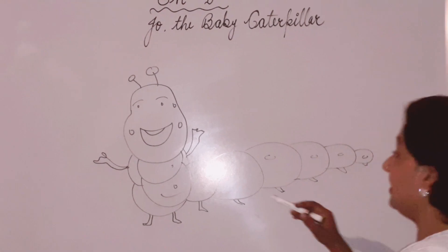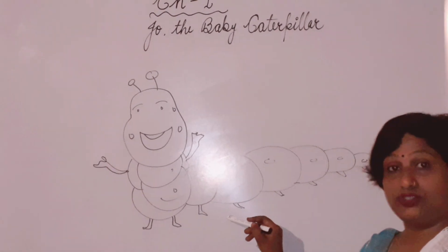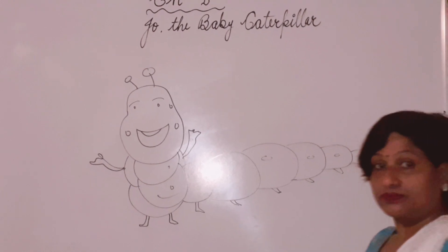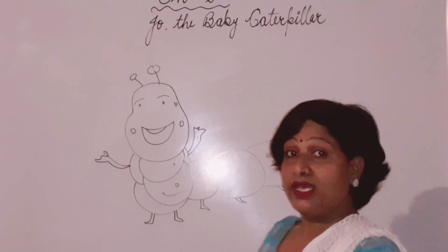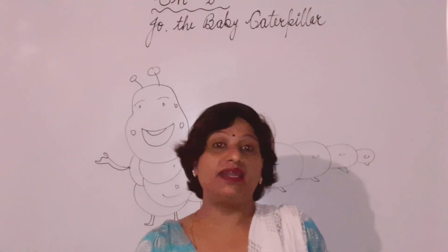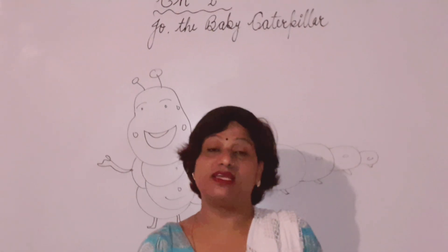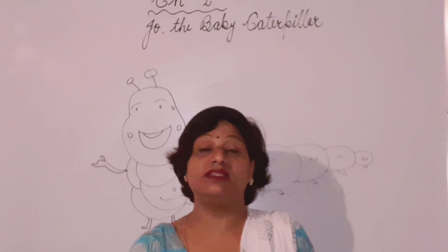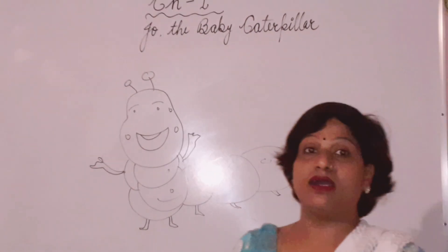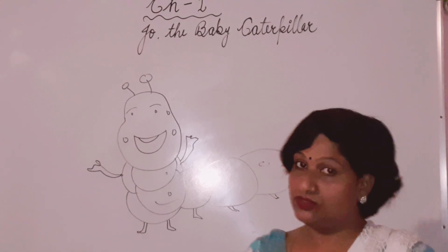This is a caterpillar. Her name is Jo, and this is a story about her. In India, weather is changing day by day, and this story is about how insects survive in different seasons.